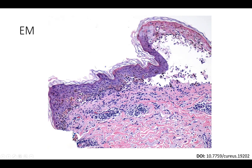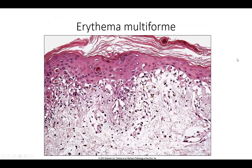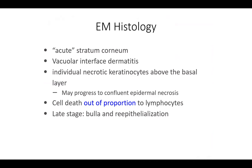To summarize erythema multiforme: look for the acute stratum corneum preserving basket-weave orthokeratosis, vacuolar interface dermatitis, and individual necrotic keratinocytes above the basal layer, which may progress to confluent epidermal necrosis especially in the dusky center. Cell death is typically out of proportion to lymphocytes. In late stage, you can have bullae or re-epithelialization if the bulla has ruptured.